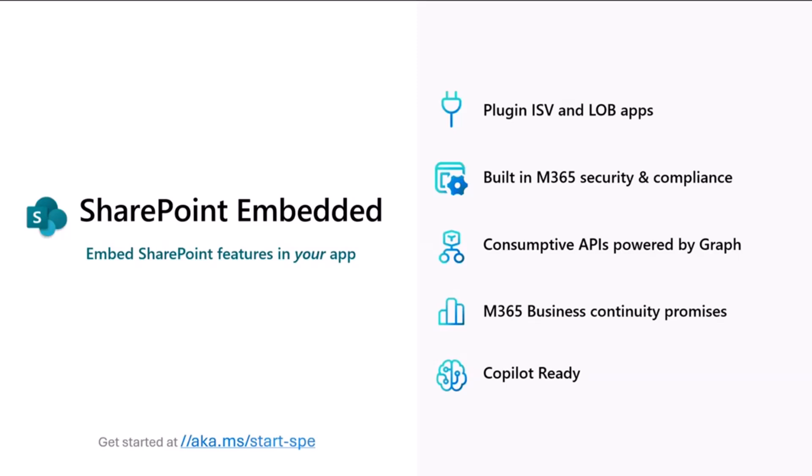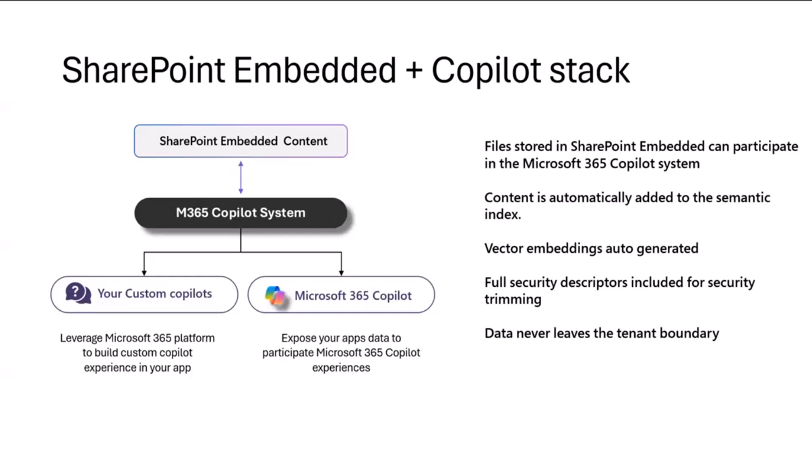SharePoint Embedded is co-pilot ready by default. Every bit of content put into SharePoint Embedded automatically goes into the lexical search index, but it also gets put into the semantic index — the same semantic index used by the M365 co-pilot system. That content is not just AI ready by default, but it's also security aware. All of the security descriptors required to deliver a secure and compliant experience — honoring permissions, information barriers, data residency, and access policies — are built into the platform, so you don't need to worry about it.